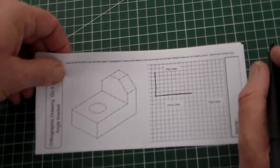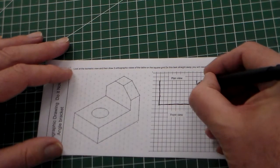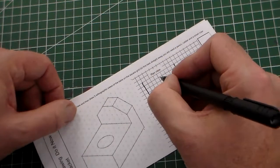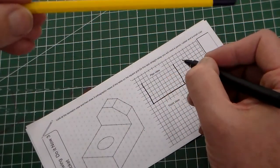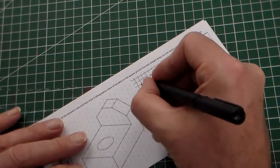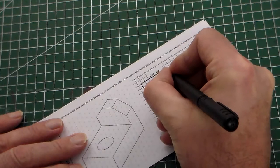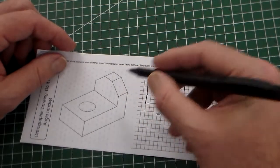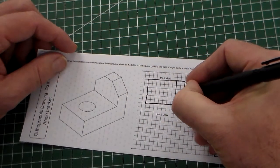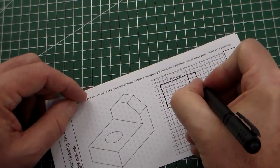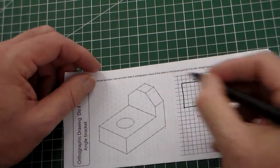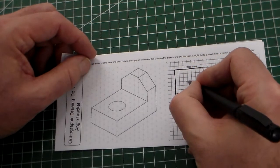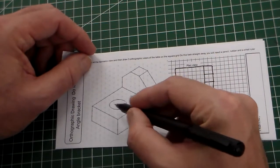Now we've got our basic outline. I'm using a fine liner, but it would be much better for you to use a pencil and ruler. Now we've got a basic outline, but we've got this part of the bracket which we need to put on here, and then we've got that detail there. So there's our outline of our plan view.